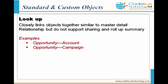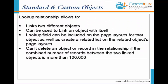We can have a lookup relationship between standard objects or between custom objects. Examples include opportunity to account and opportunity to campaign. A lookup relationship can relate two different objects, or it can be a self-relationship within the same object. The lookup field must be included on the page layouts for the related list to be displayed.